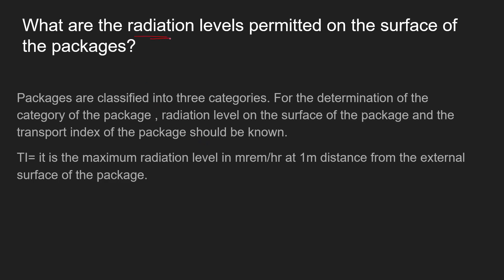Packages are classified into three categories based on the radiation level at the external surface and the transport index. The transport index (TI) is defined as the maximum radiation level in millirem per hour at one meter from the external surface of the package. Both the surface radiation level and the transport index must be measured to determine the category of the package.